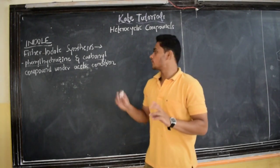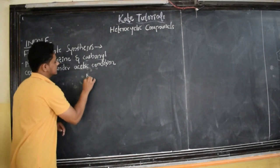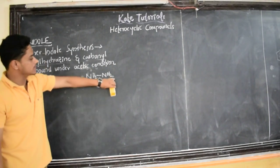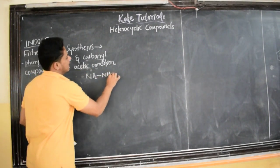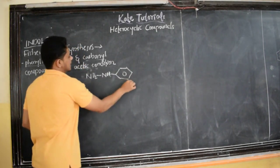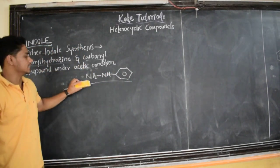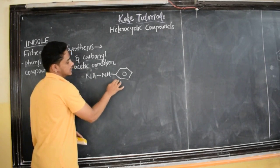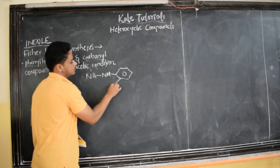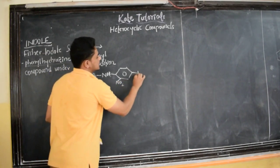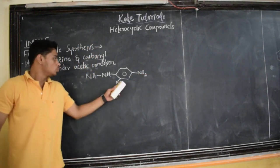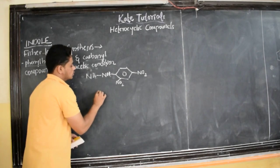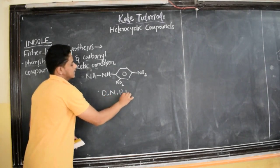First we should know what is phenyl hydrazine. Hydrazine is written as NH2–NH2. If I replace one of the hydrogens by a phenyl group, that is C6H5, then this is known as phenyl hydrazine. Also, if the hydrogens on the ring are replaced by NO2 groups, we get 2,4-dinitrophenyl hydrazine, which we call DNPH.